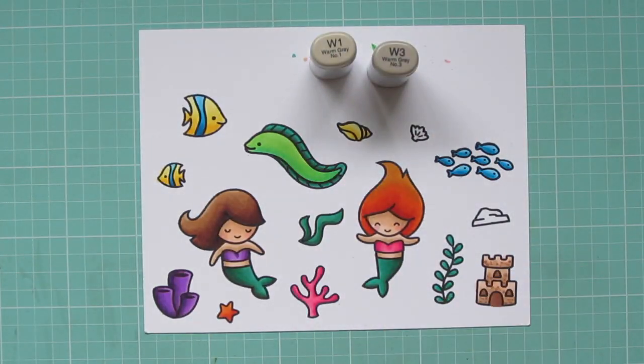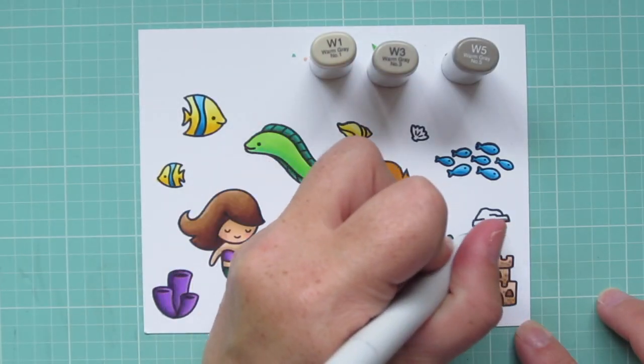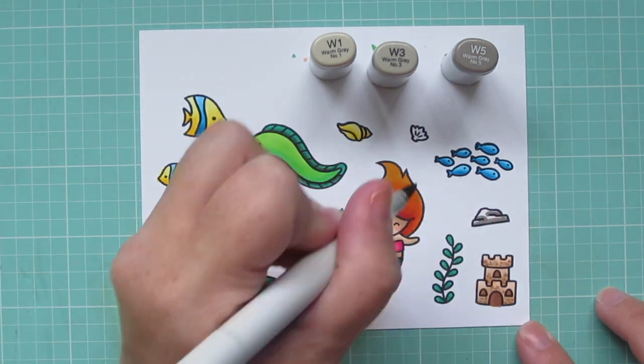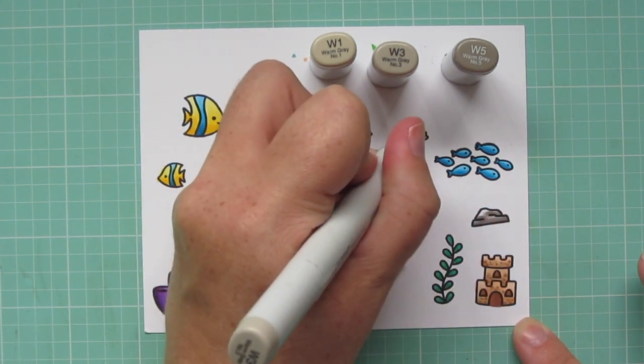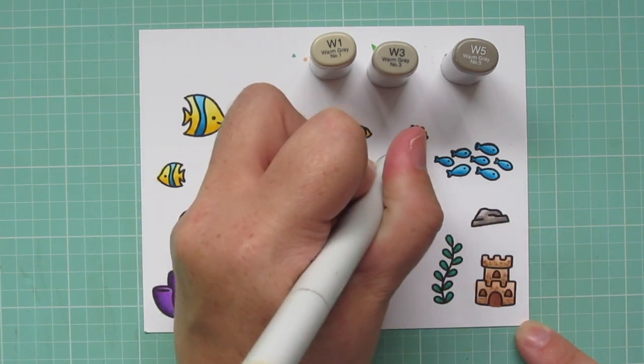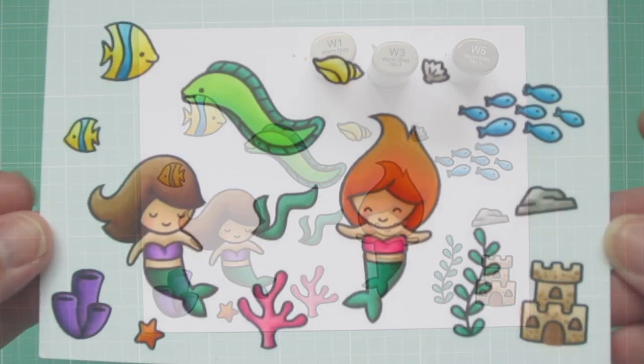For the little rock, I'm using W1, W3, and W5. And I'll also do the little clamshell in those shades. I try to use each of those color combinations in more than one area on the card. And then I'll trim these out with the matching dies.